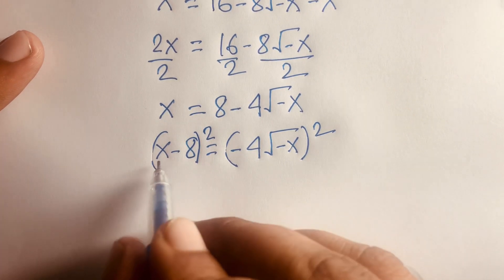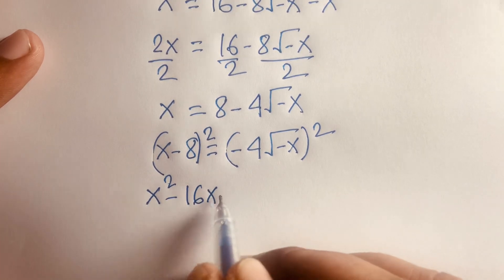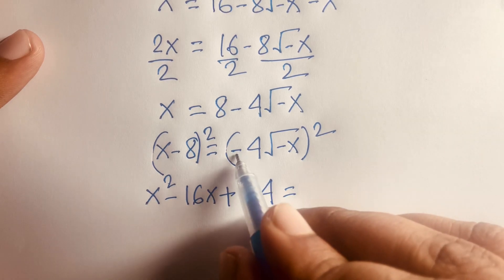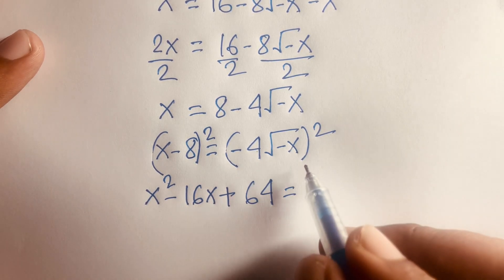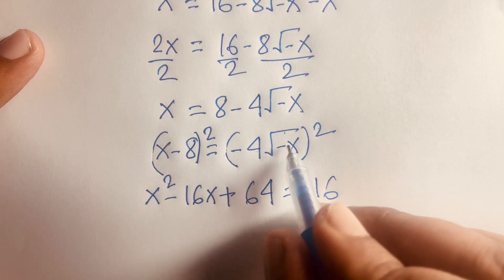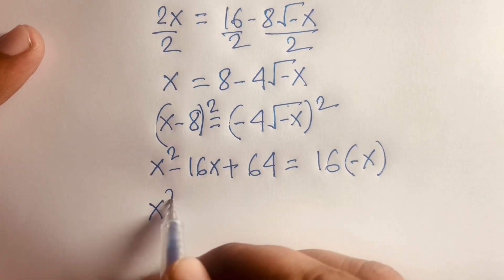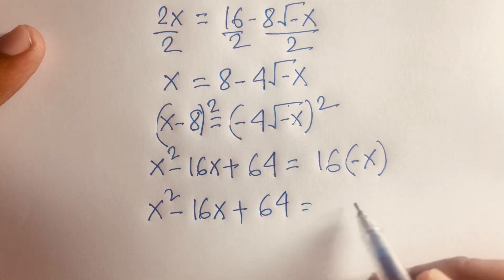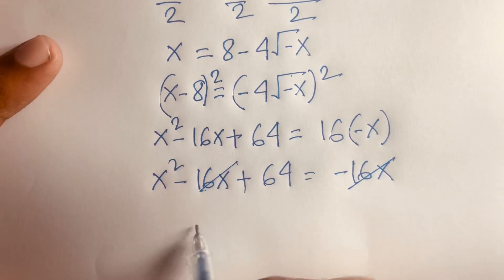Expanding (x − 8)² using (a − b)² gives x² − 16x + 64. On the right side, (−4)² = 16, and squaring √(−x) gives −x, so we get x² − 16x + 64 = 16(−x) = −16x. The −16x terms cancel, leaving x² + 64 = 0.